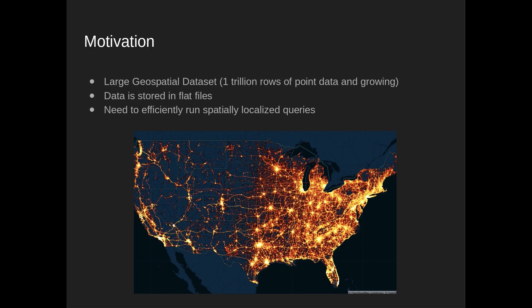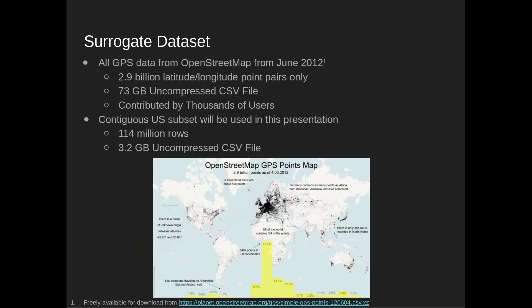We'll show you a few different solutions and look at the computational costs between them in this presentation. We'll use a surrogate dataset — OpenStreetMaps GPS data collected from thousands of volunteers from June 2012. We're going to use a subset located in the contiguous US, which is about 114 million rows and a 3.2 gigabyte uncompressed CSV file. It's a bit smaller than the trillion rows mentioned, but these principles do scale up to much larger datasets.